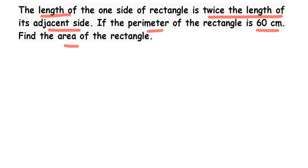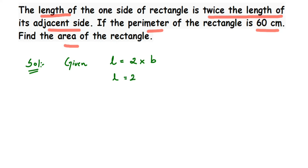Now let's start. From the question, it is given that the length is equal to twice the length of its adjacent side. I am taking the adjacent side to be breadth, using the variable B. So I rewrite this: length L is equal to 2B.